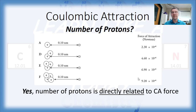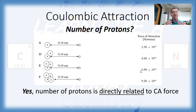One thing to note: not only are they directly related, but from trial A to D we double the number of protons and the force of attraction also doubles — it changes by the same numeric factor. From A to E, we triple the number of protons and the force of attraction also triples. Whenever your variables change by the same numeric factor, we say that they are proportional — and because they're changing in the same direction, they are directly proportional.